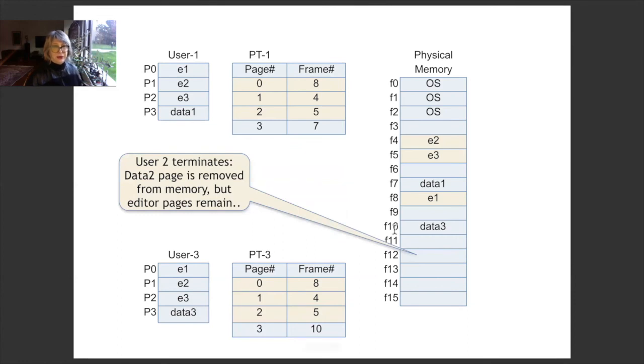And then assume that user 2 terminates. Data 2, the page related to data 2, is removed from the memory. It was in frame 12, and it is removed from there. Because there are other users using the editor program, the editor program should remain in the memory.